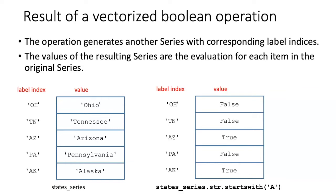To understand how that works, let's think about how a vectorized operation would work which results in boolean values. One example is to determine which values start with a particular letter. The method for this operates on an attribute of the series which makes the strings available. So this expression will determine for each item in the series whether it starts with the letter A or not. Arizona and Alaska start with the letter A, so their values are true and the values for the other states are false.